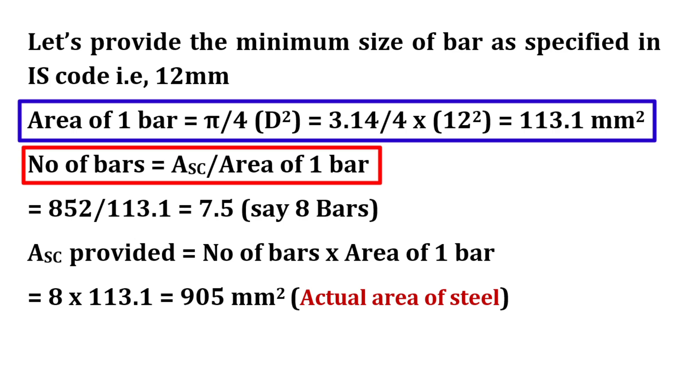Number of bars will be equal to Asc upon area of 1 bar. On substituting these values, number of bars will be 7.5, say 8 bars.